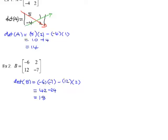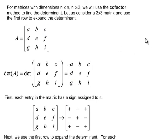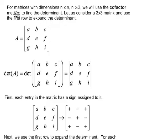Moving on — finding the determinant of a higher-dimension matrix will be a little bit more involved, so I will go slow. For matrices with dimensions n by n where n is greater than or equal to 3, we use a method called the cofactor method to find the determinant. We start with a 3 by 3 and use the first row to expand. To find the determinant, you need to identify which row or column you are using.